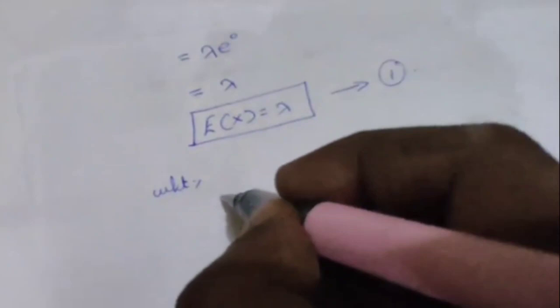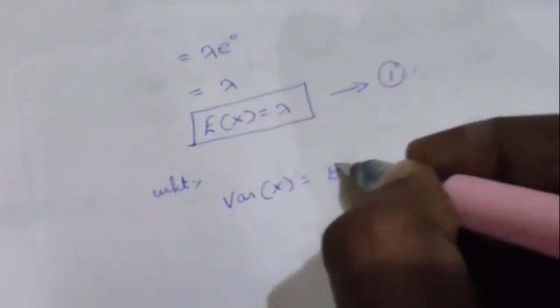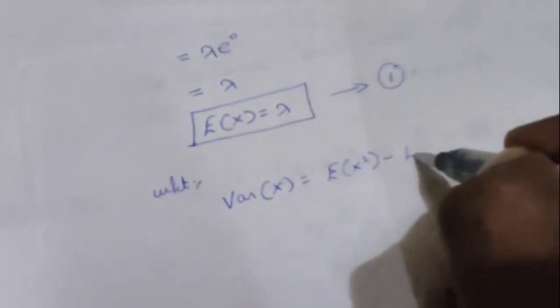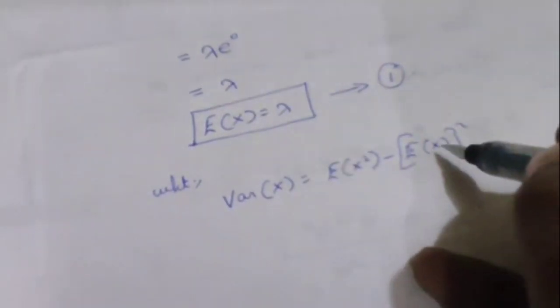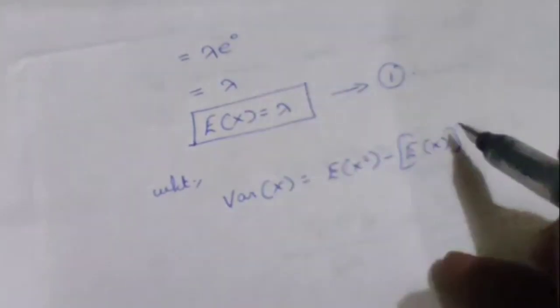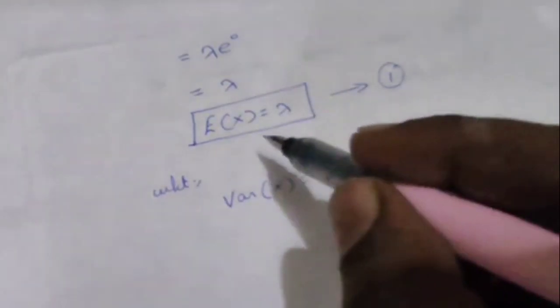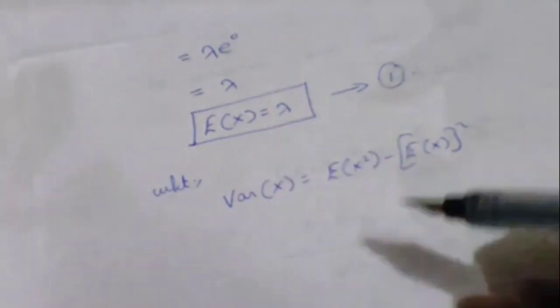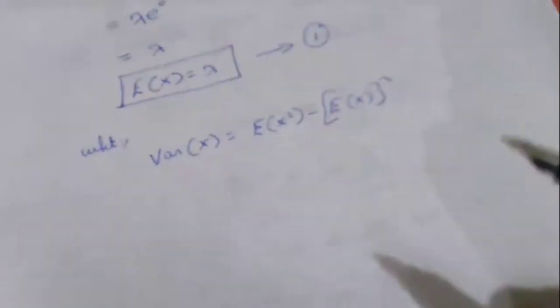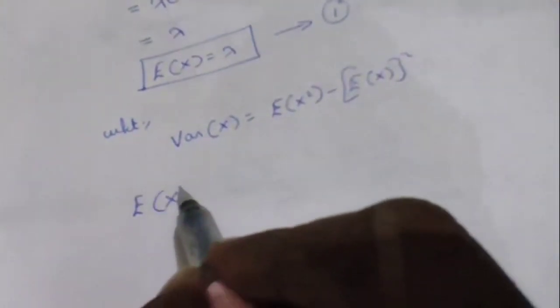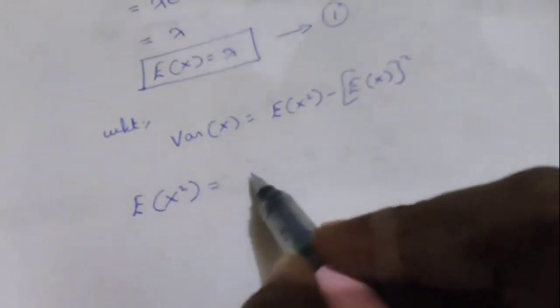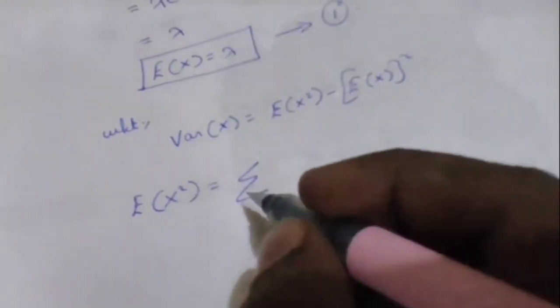Now we have to find the variance. We know variance of x equals E of x squared minus E of x whole power 2. We already know E of x equals lambda from equation 1. Now we need to find E of x squared, so we take the summation definition of E of x squared.